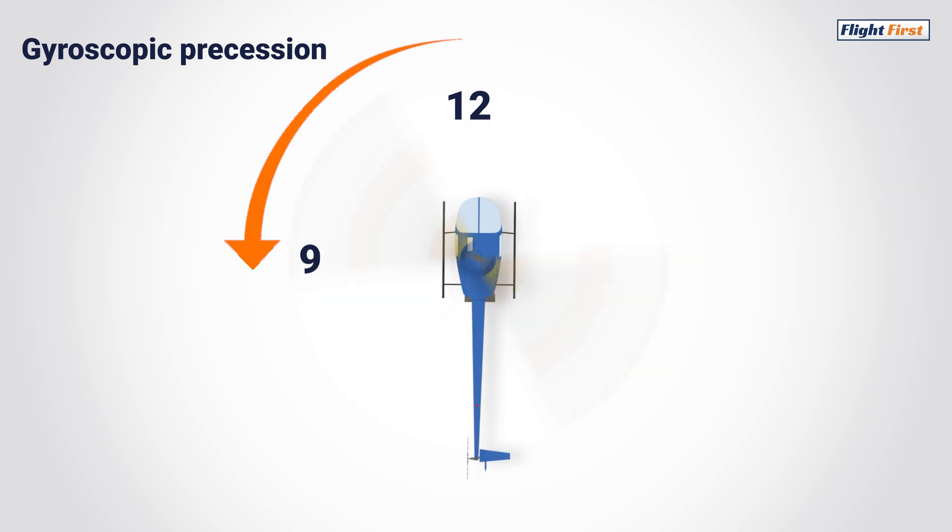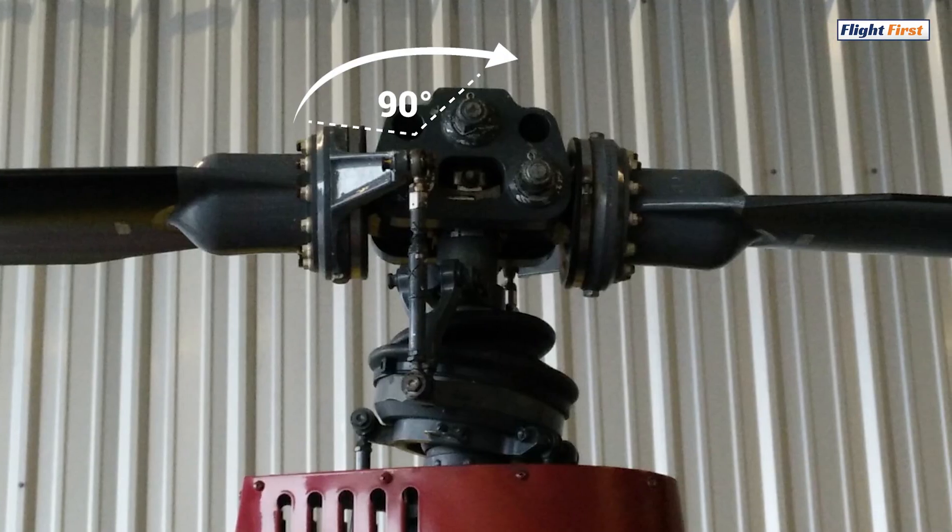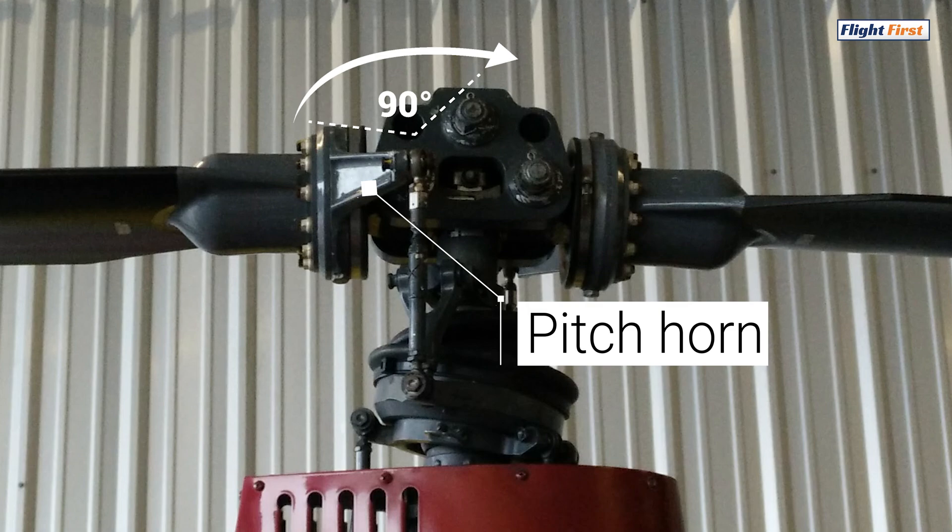As helicopter pilots, we don't actually have to deal with this, as the design of the rotor system already has gyroscopic precession taken into account. This is done by the use of pitch horns, which effectively displaces the pilot input by 90 degrees, completely nullifying gyroscopic precession for the pilot.